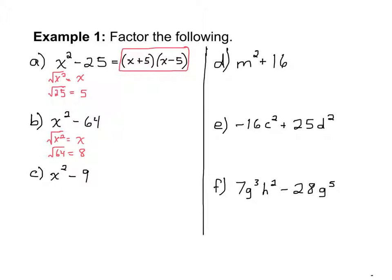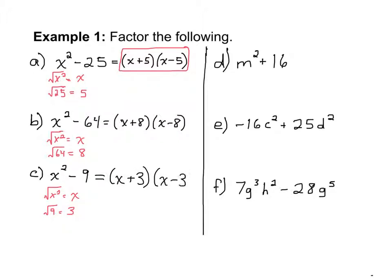In our next example, x squared minus 64: the square root of x squared is x and the square root of 64 is 8. It is a binomial with both terms being subtracted, so it is a difference of squares. Our factors are x plus 8 and x minus 8 — order doesn't matter. In example c, x squared minus 9: the square root of x squared is x and the square root of 9 is 3, so we can write the answer as x plus 3 times x minus 3. You can also check your answers by multiplying out the two factors to make sure you get back to the original polynomial.